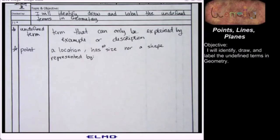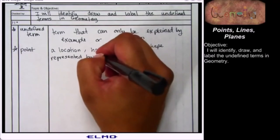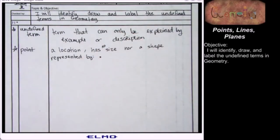We can't actually draw a point. So we're gonna draw a representation. We're gonna say when we see that symbol, we're talking about a point.